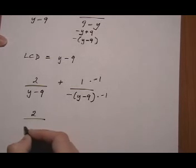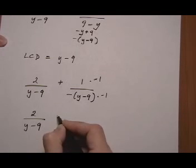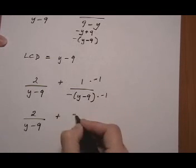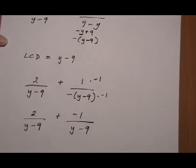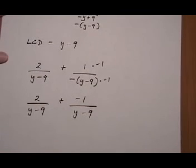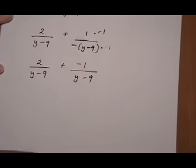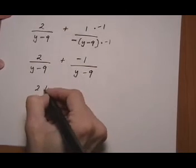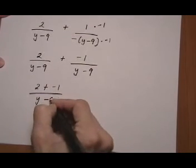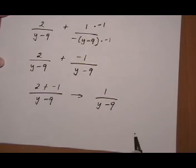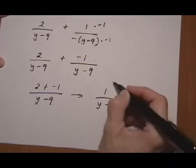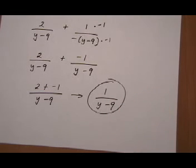So now I have 2 over Y minus 9 plus a negative 1 over Y minus 9. And that gives me 2 plus minus 1 over Y minus 9, or 1 over Y minus 9. And that's the final answer.